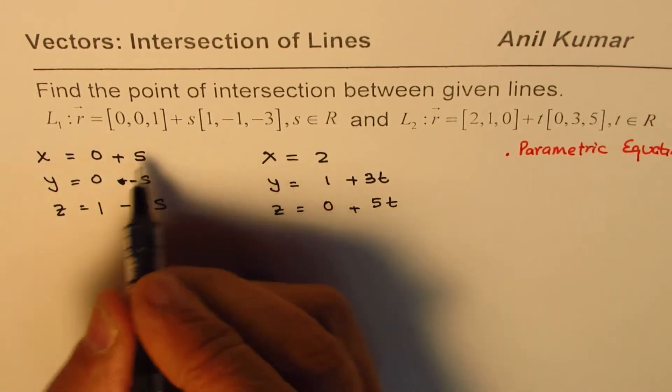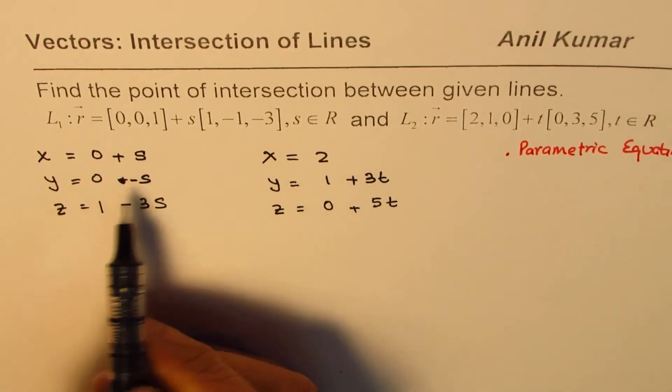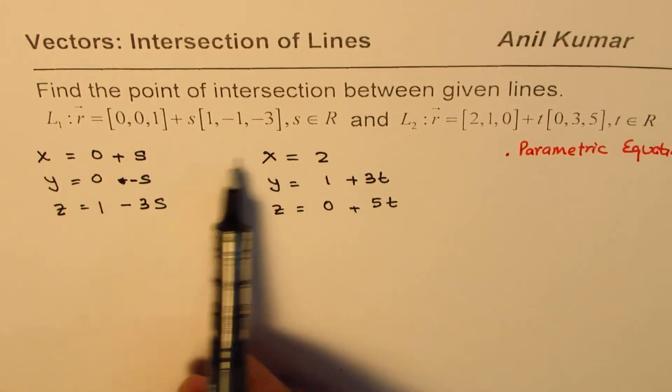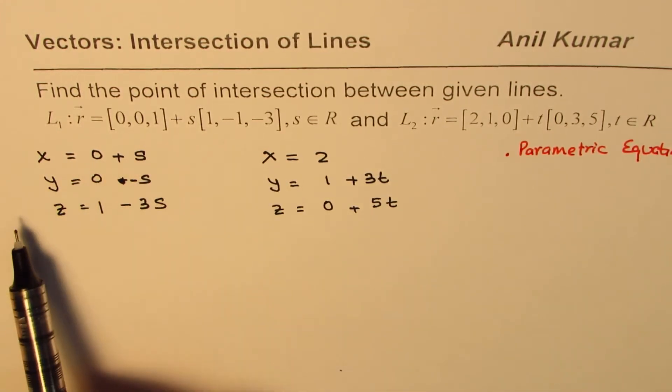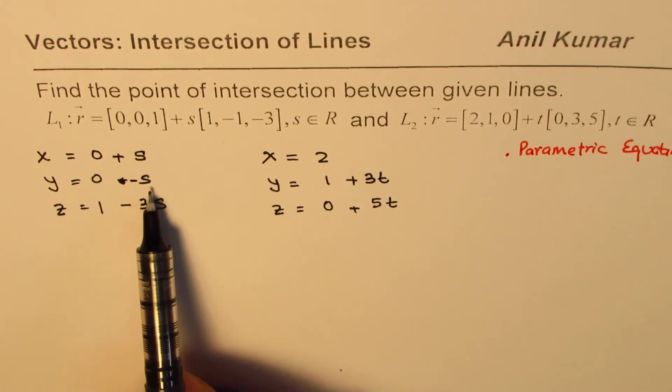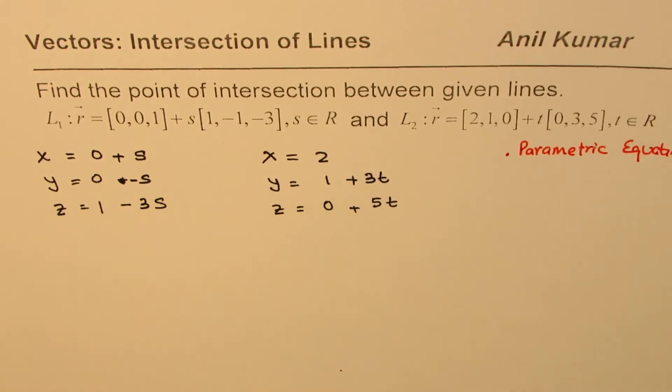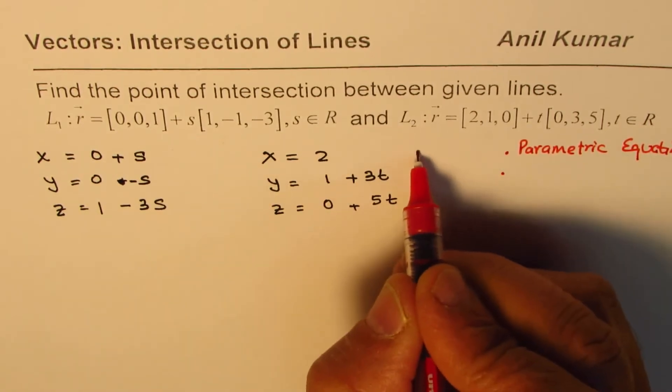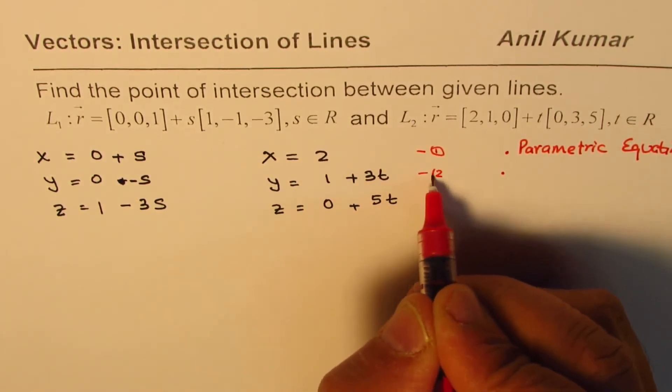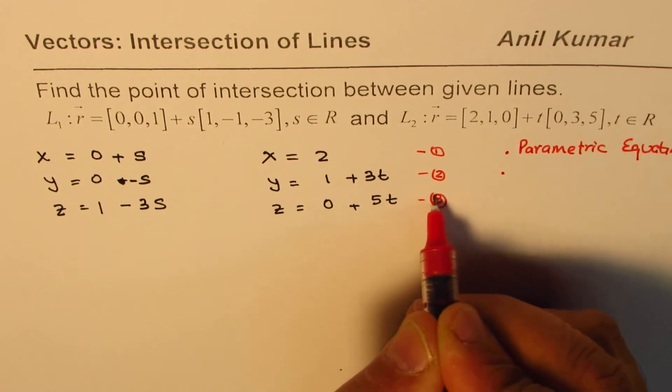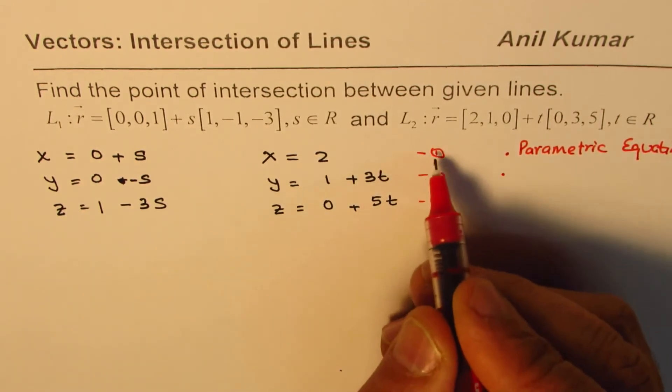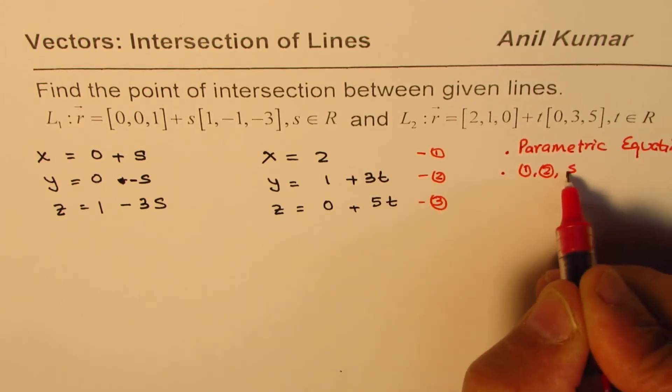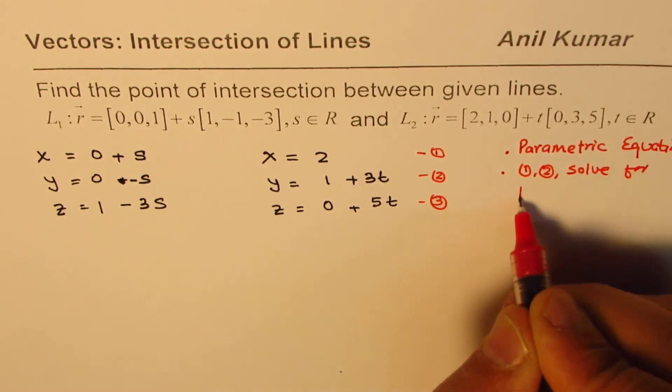Now once we are given the parametric equations, what we can do is we can equate these two x's and find the value of s. Once we find the value of s, we can find the value of t. So at this stage we will use two equations. This is the first set and this is the second set, that is the third set for us. So from equations 1 and 2, solve for parameters.